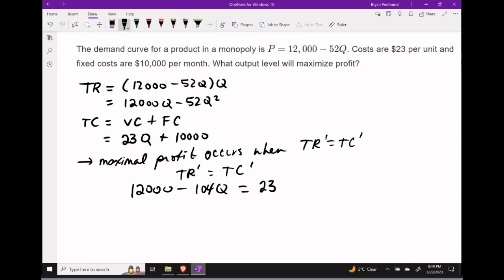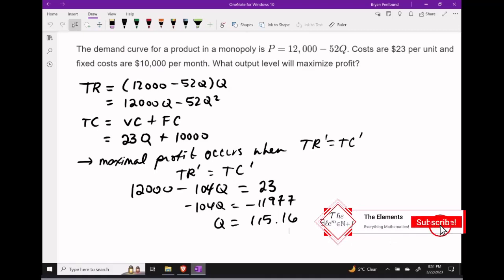Subtracting 12,000 from both sides gives -104Q = -11,977. And dividing both sides by negative 104, gives Q = 115.16. This means maximal profit should occur around 115 units.